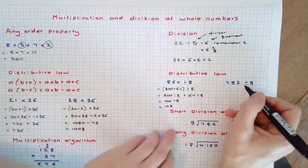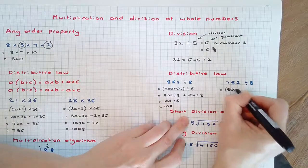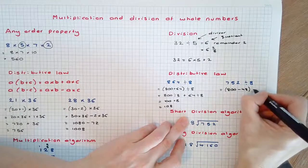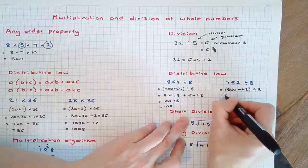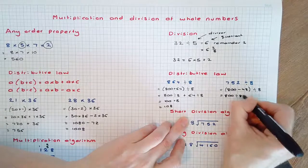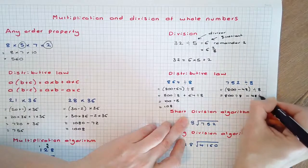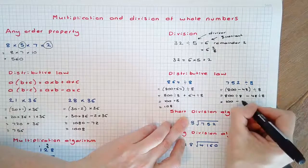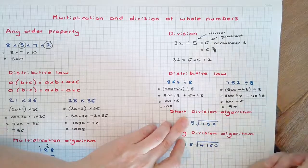Similarly, 752 ÷ 8 could be rewritten as (800 - 48) ÷ 8. Doing each division separately: 800 ÷ 8 minus 48 ÷ 8. We get 100 - 6, which equals 94.